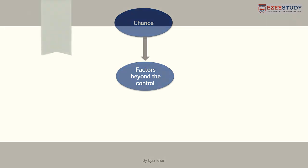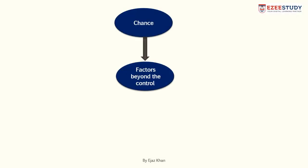Last is chance. According to Porter, there will be certain factors that will be beyond the control of any government or the organizations, but those factors will have a vital role in giving competitive advantage to one nation over the other. For example, if a country is hit by an energy crisis, it will push electronic device manufacturers to produce energy-efficient devices, and if they gain this skill of producing energy-efficient devices, they will be able to compete in the international markets where the demand for such products will be high. So chance will also have an important role according to Porter in giving competitive advantage to one nation over the other.